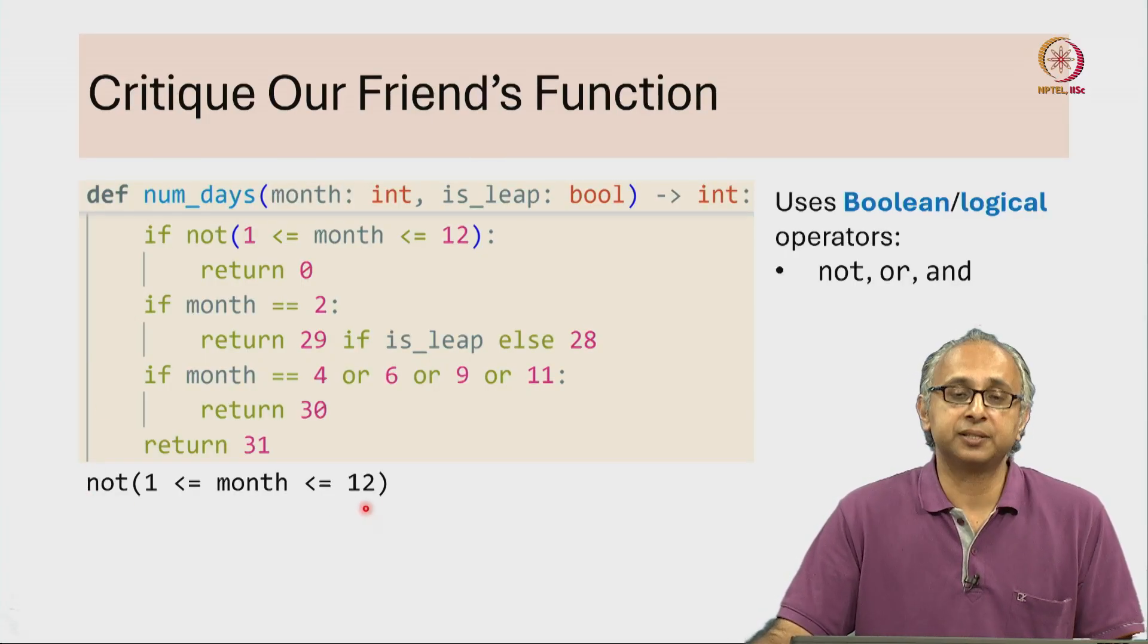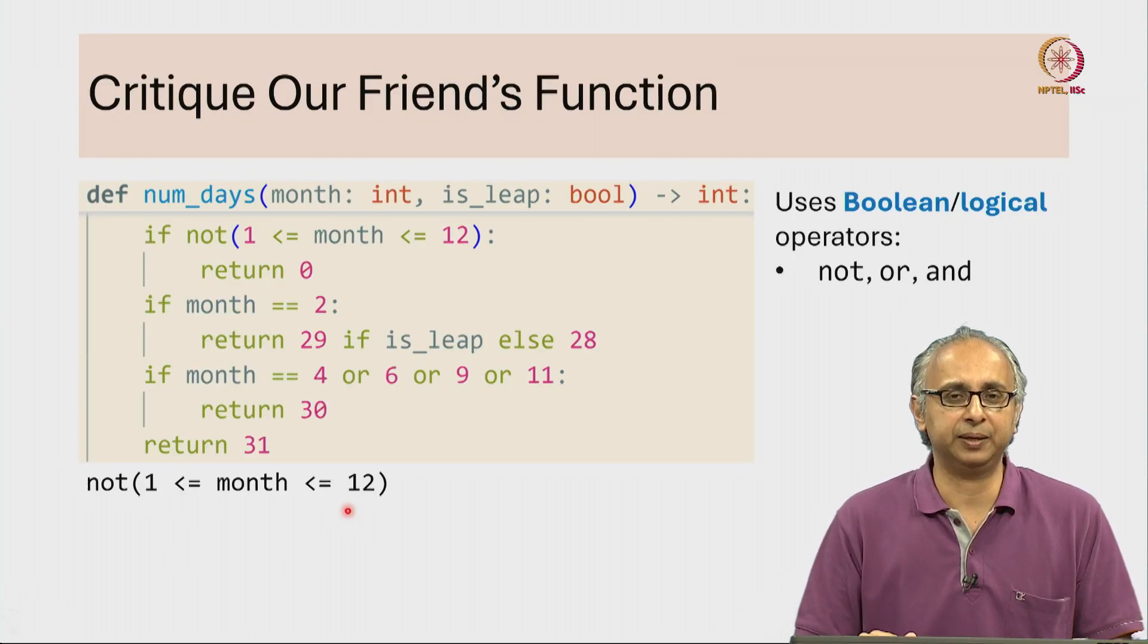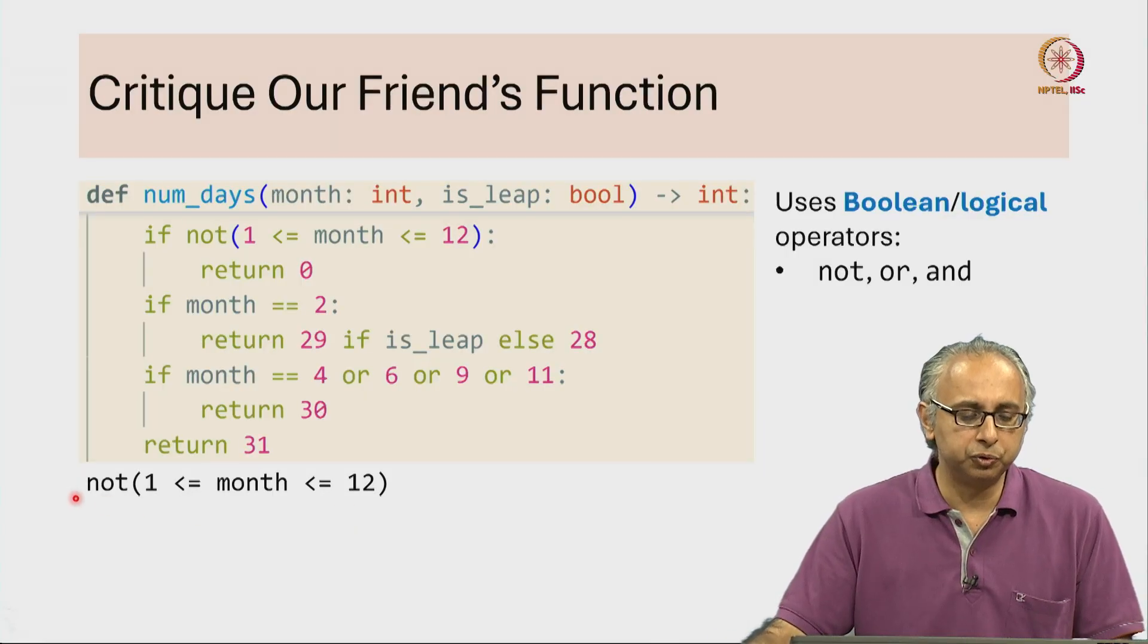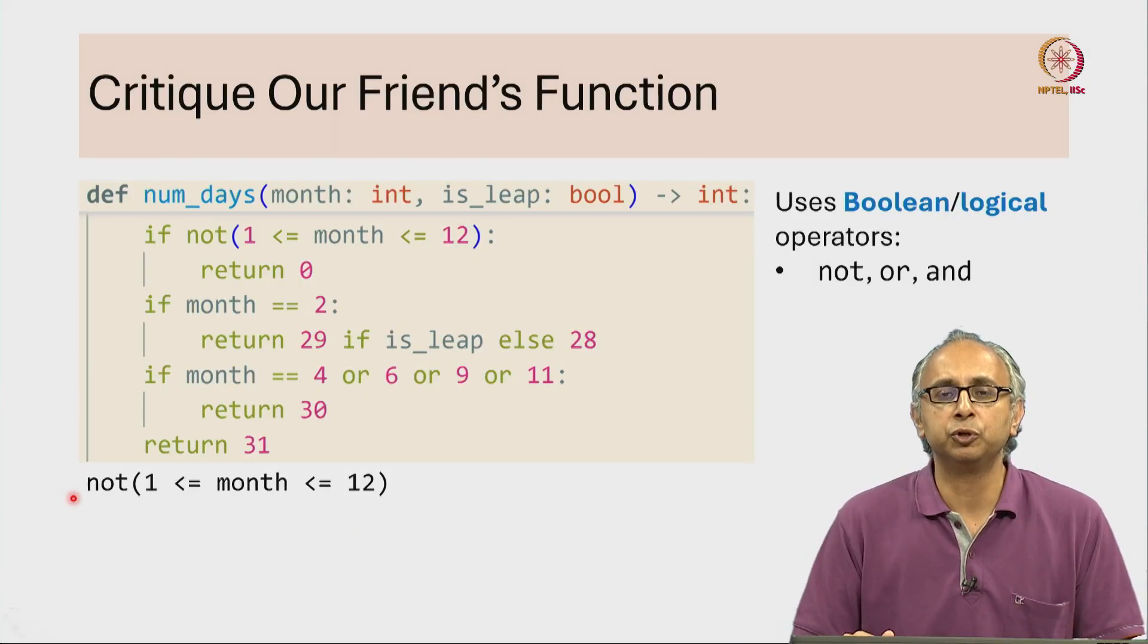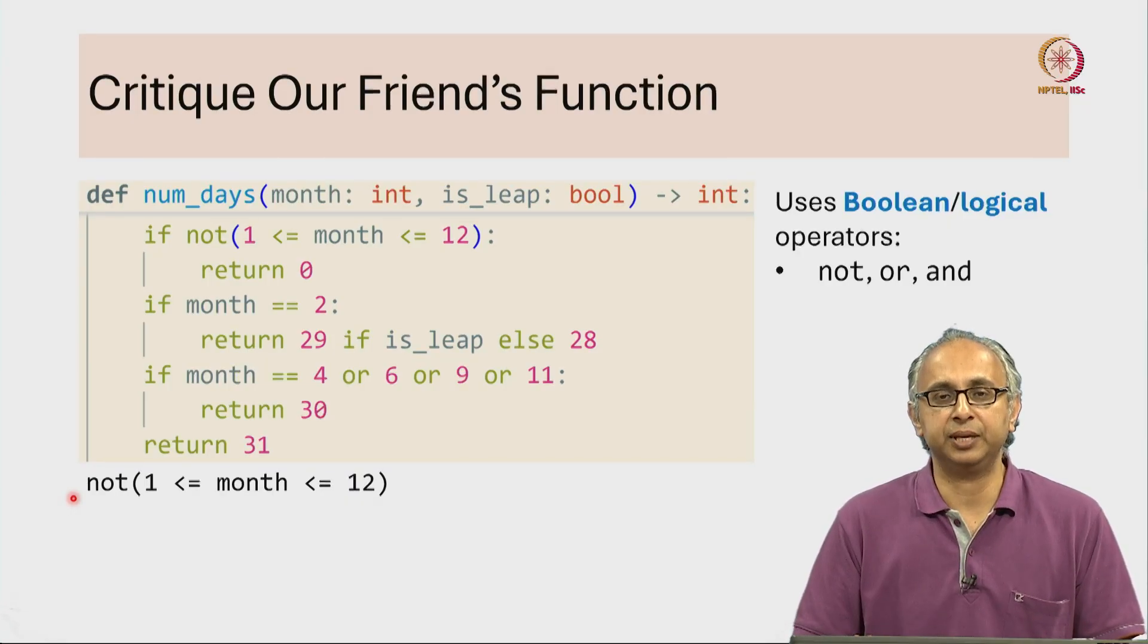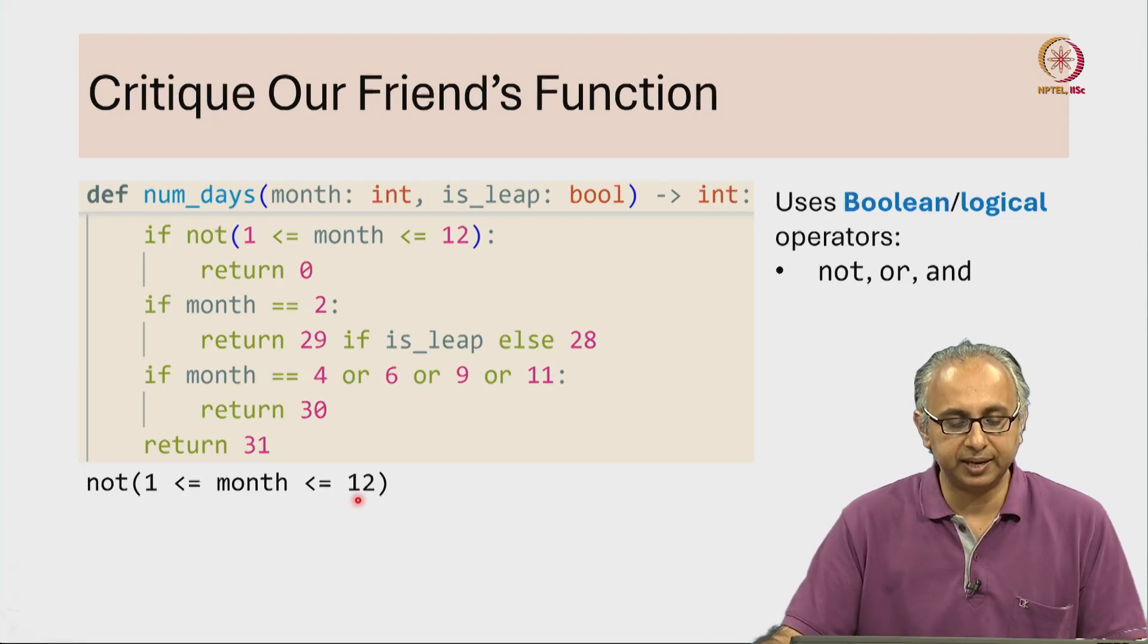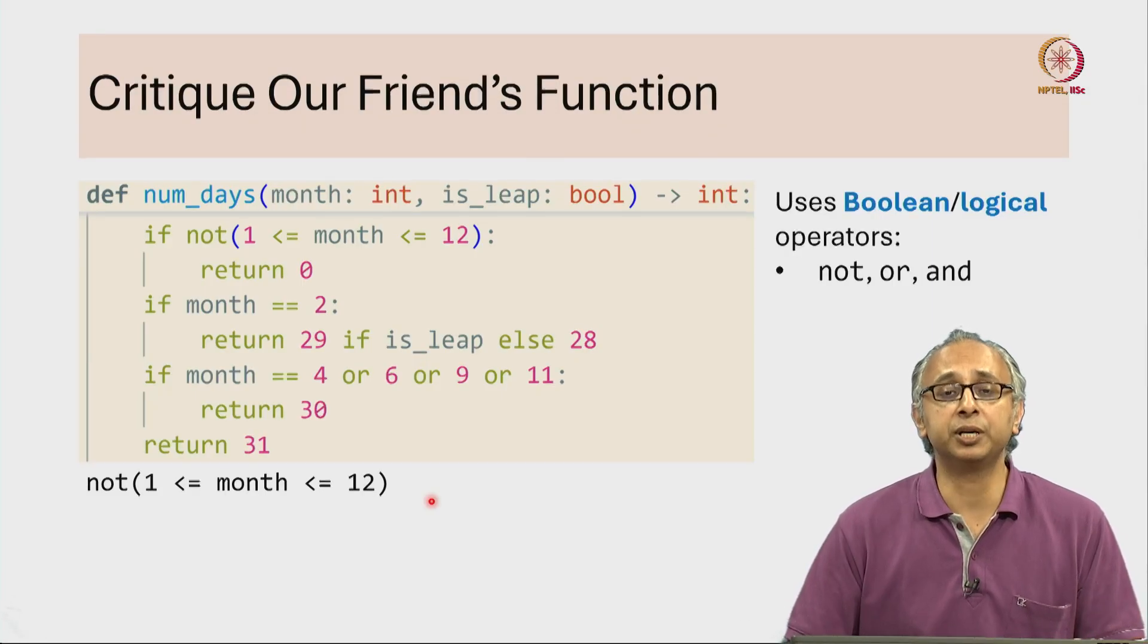But you might find this a little bit hard to read. You might feel that is a bit of a roundabout way of saying it. And it turns out that you could rewrite this perhaps in a way that is easier for you to understand. Let me explain how you might try and simplify this expression. So firstly, this expression inside the brackets 1 less than or equal to month less than or equal to 12 is really checking two conditions.